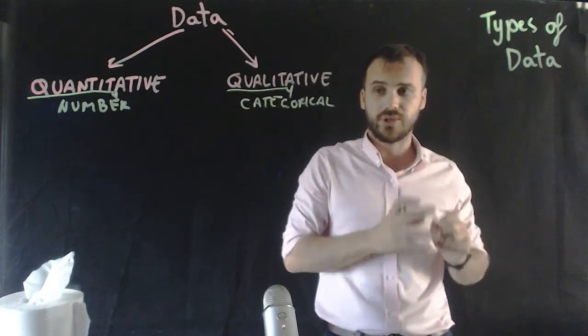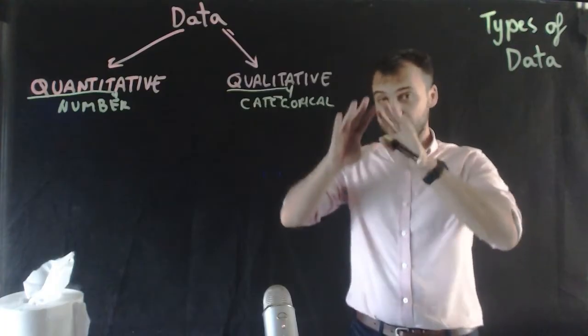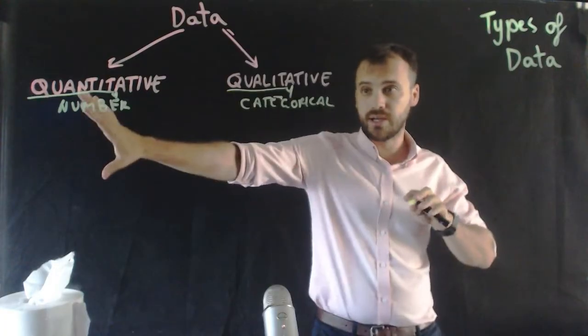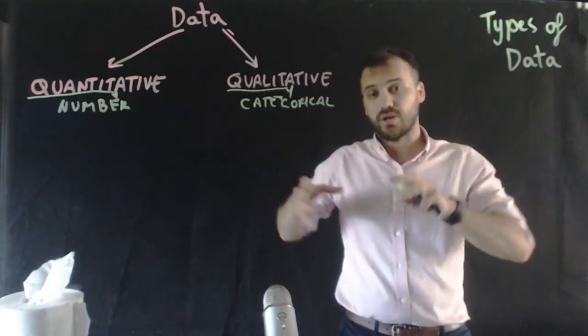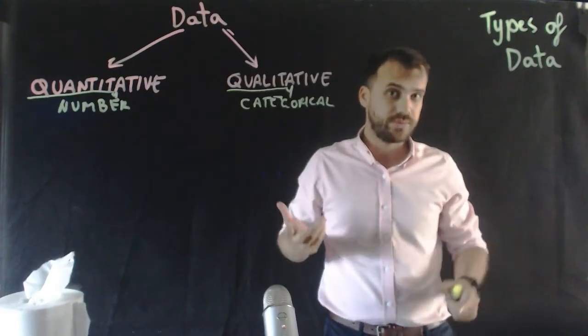Black hair, brown hair, blonde hair. So there are two major types of data, number data and categorical data. But we can split those data types into different data types as well.